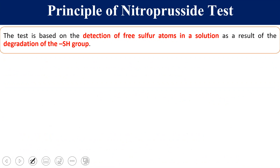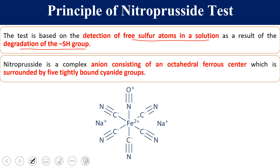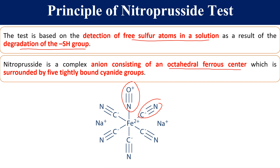The principle of this test is based on detection of the free sulfhydryl group — wherever a free sulfur atom is present in solution, it will give a positive test. Nitroprusside is a complex compound where ferrous is associated with six different bonds: five cyanide (CN) bonds and one NO group. It is an anion containing an octahedral ferrous center surrounded by five tightly bound cyanide groups and one NO group. This is the basic structure of nitroprusside.